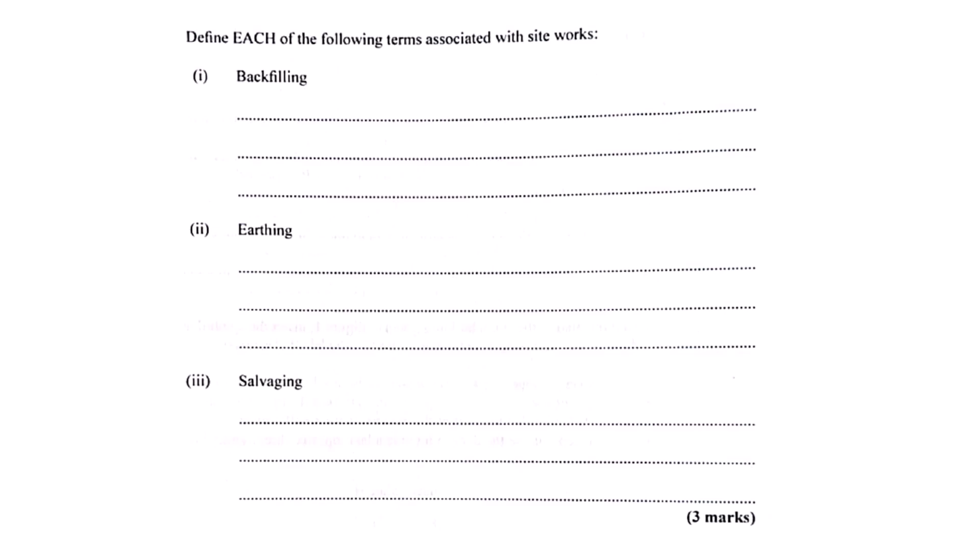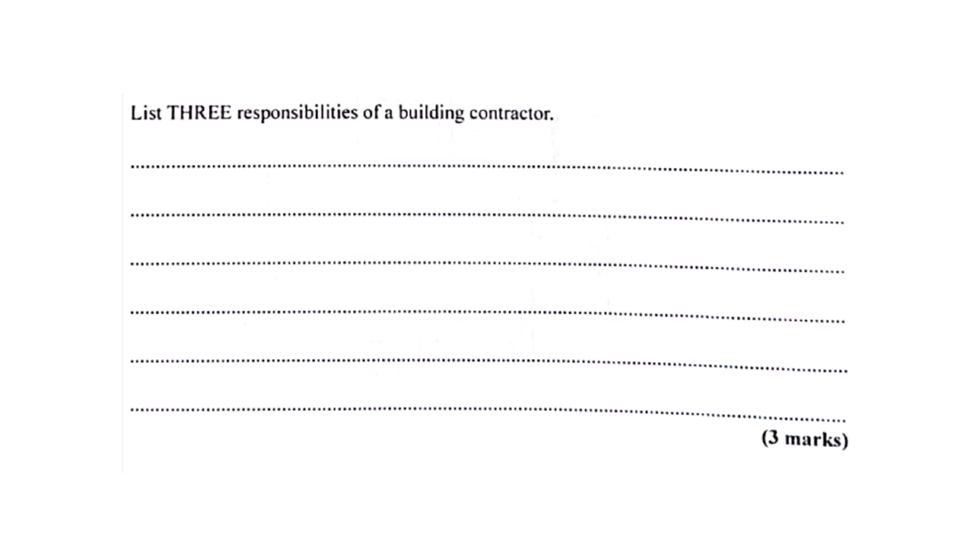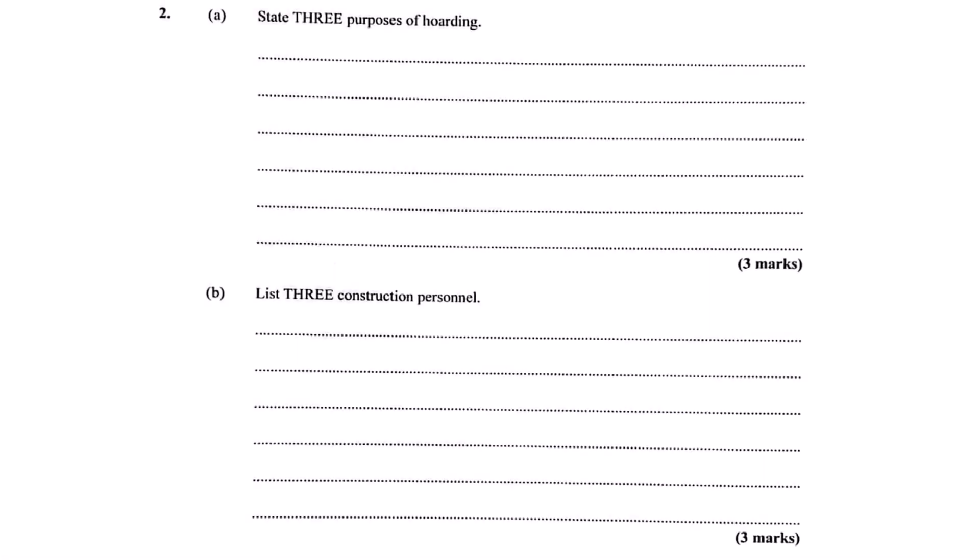So last couple of points. Who's actually running the show here? The source mentions the building contractor. Yeah. The contractor is generally the one responsible for the whole thing. Making sure it's built right, following plans, managing safety, hiring people. The main coordinator. Pretty much. They manage all the different trades and subcontractors. And who are those people on site? The source gives examples like general laborers doing a lot of the physical work. Skilled tradespeople, carpenters, bricklayers, electricians, plumbers. The specialists. And site managers overseeing the day-to-day operations. Right. Keeping everything on track. It's a real team effort. Lots of different skills needed.